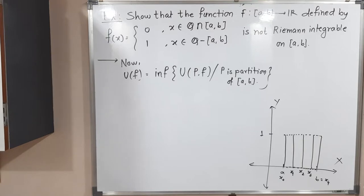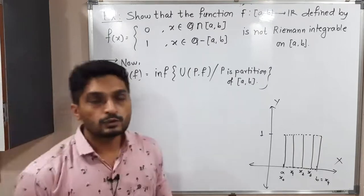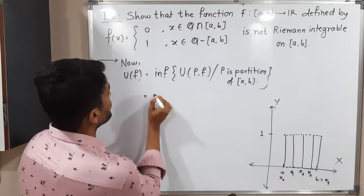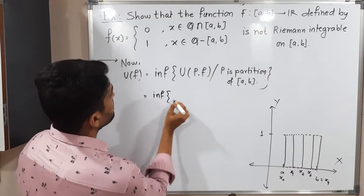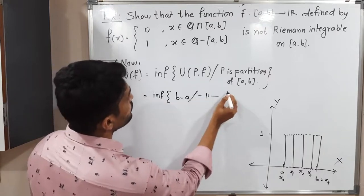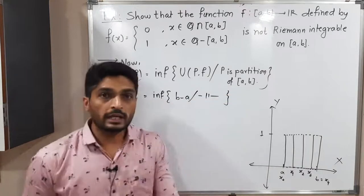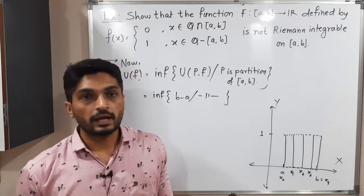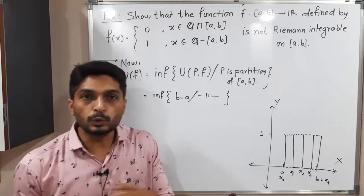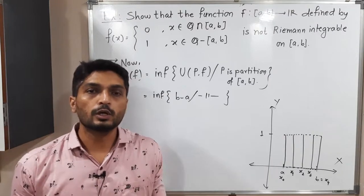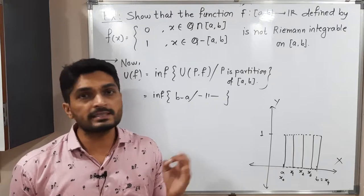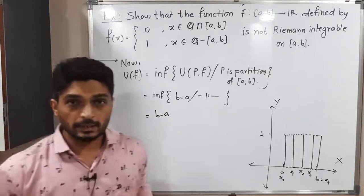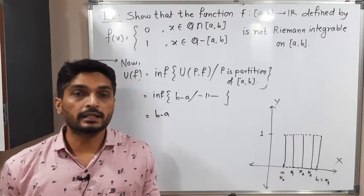The upper integral is defined as the infimum of U(P,f) over all partitions P of [a,b]. Since U(P,f) = b − a for every partition — it is a constant — its infimum is also b − a. Therefore the upper integral equals b − a. Now we have to work on the lower integral.